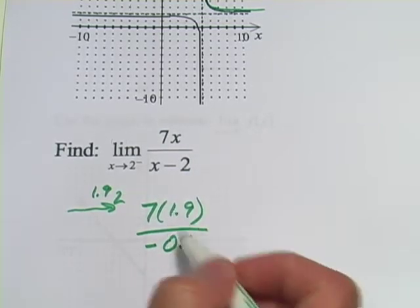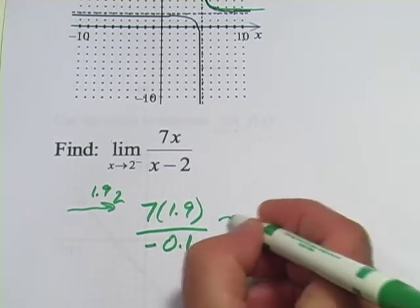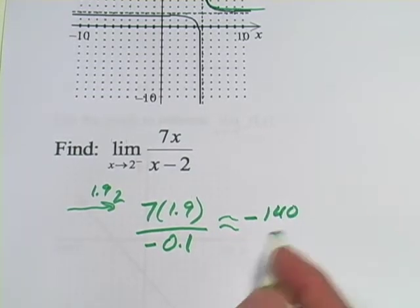So, when you divide 14 by negative 0.1, we're going to get something like negative 140. That's a pretty big value.